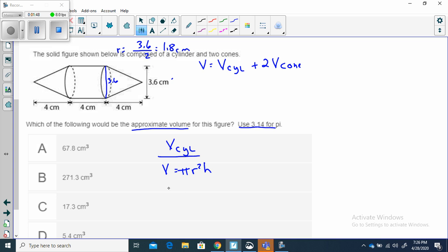Let's put this in. Volume is equal to, and they said 3.14 for pi. The radius is 1.8, and we need to square it. Our height, what's the height of our cylinder? The distance between the two bases is 4 centimeters, so we plug in our 4.